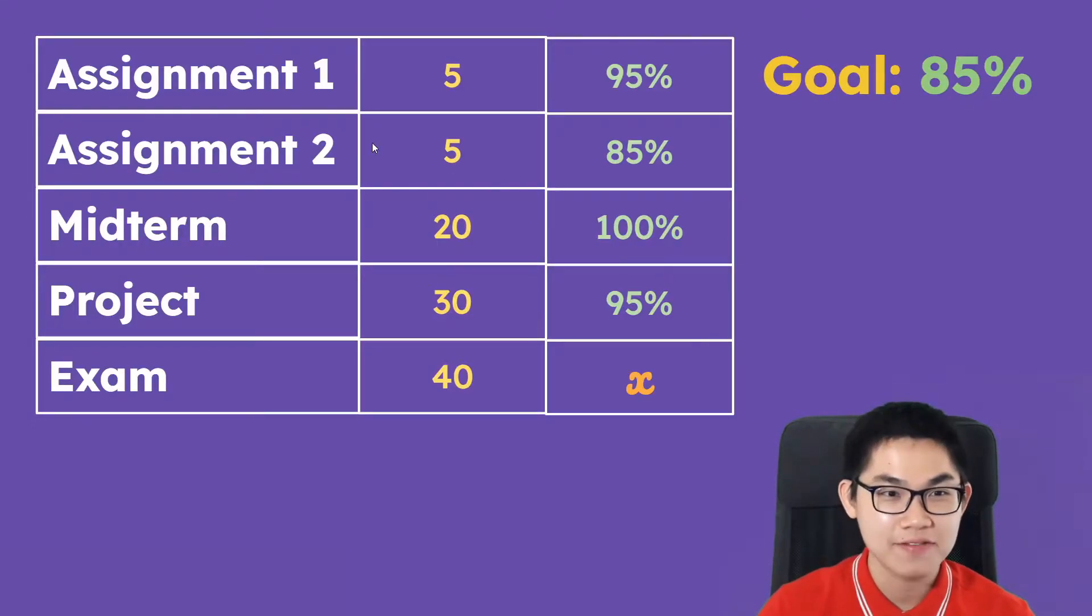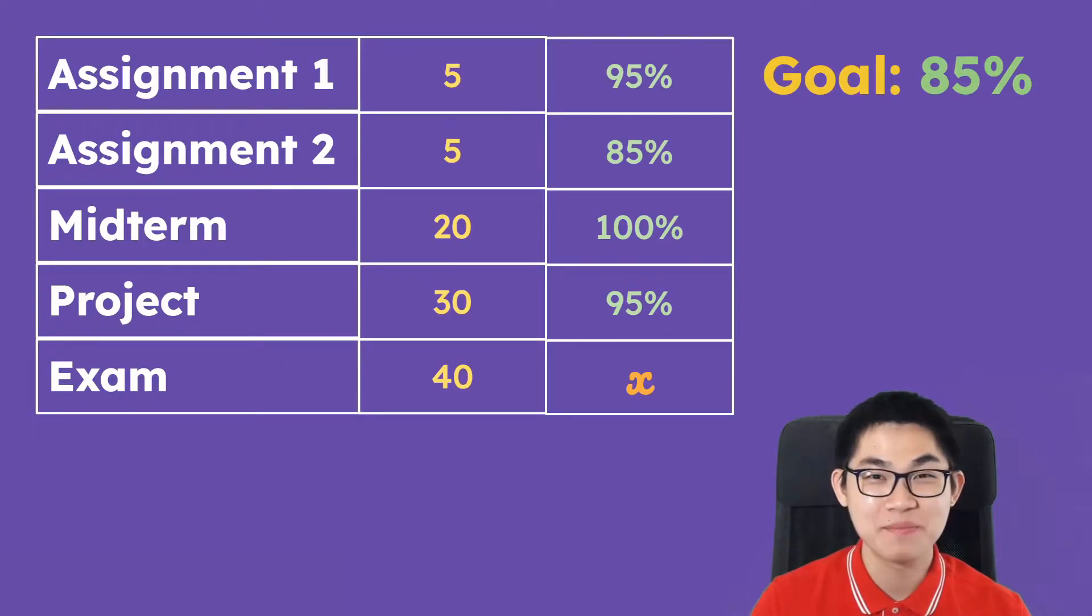So let's say you have assignment 1, which is worth 5% of your grade, assignment 2, also worth 5%, the midterm is worth 20%, the project 30%, and the final exam, which is 40%. And for the sake of this example, let's say that you aim for an 85% on your transcript, but of course you can aim higher if you wish.